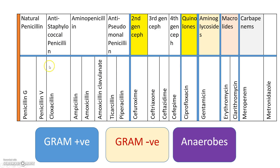We have the natural penicillins such as penicillin G and penicillin V, the anti-staphylococcal penicillins such as cloxacillin, and the aminopenicillins such as ampicillin, amoxicillin, and amoxicillin-clavulanate. We also have the anti-pseudomonal penicillins such as ticarcillin and piperacillin. These are the main groups of penicillins. Then we have second-generation cephalosporins and third-generation cephalosporins.